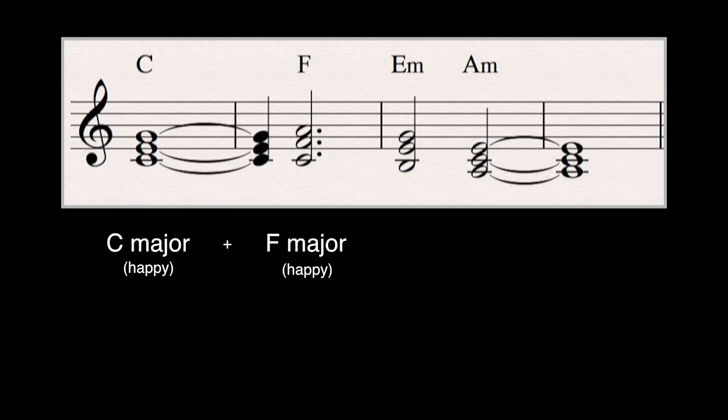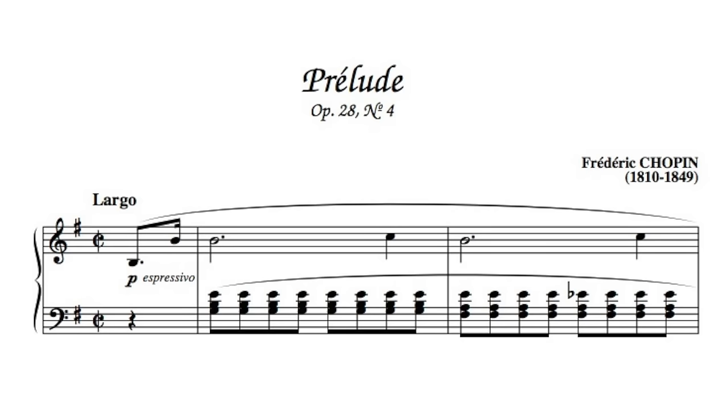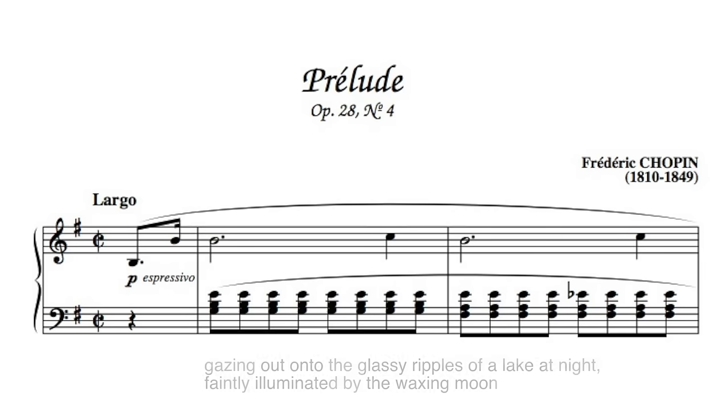Bear in mind, it would be simplistic to reduce a piece of music to the atomistic progression of chords and their individual emotional responses. A chord progression and a piece of music in general is more than just the sum of its parts. I've annotated a few of my emotional responses to the first couple of chords of Chopin's Prelude No. 4 in E minor. This is kind of a fun exercise because there's no real rules to it, but the more that you think along these lines, the more you're going to be able to form connections with all the kinds of music you listen to and the music that you play.